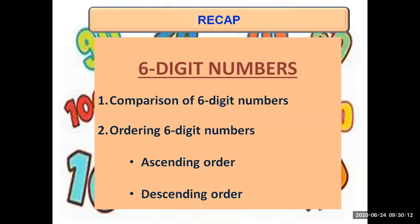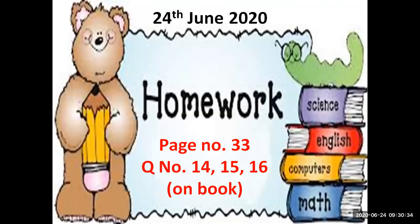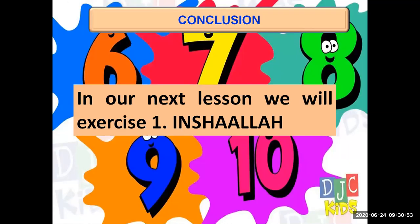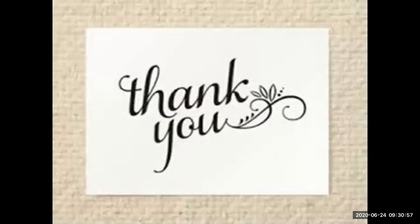Today we studied six digit numbers — comparison of six digit numbers about which one is greater and which one is smaller, and ordering of six digit numbers in ascending order from smaller to bigger and descending order from bigger to smaller. Homework: page number 33, questions 14, 15, and 16 are to be done in the book. In the evening, the answer key will be provided. In our next lesson, we will do exercise one. Thank you so much for your time. Stay home, stay safe.